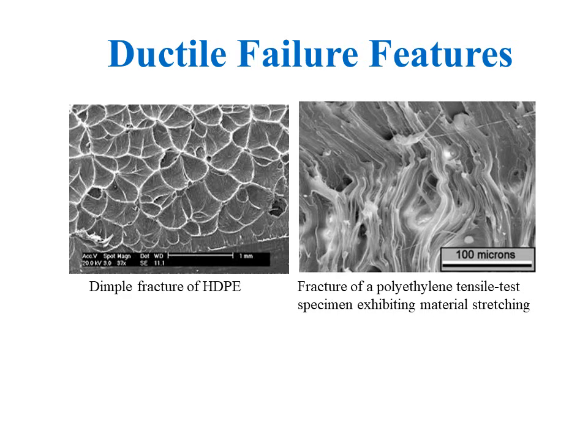Similarly, the fibrous dull appearance of a tensile fractured specimen of polyethylene also indicates ductile type of fracture. Polyethylene is a ductile material and requires high energy to break. SEM images of the polyethylene specimen show fibrous morphology due to stretching of the material, indicating that it failed in a ductile manner. Using fractography, we can identify the root cause of material failure, and once identified, we can prevent it and improve the quality and service life of the product.